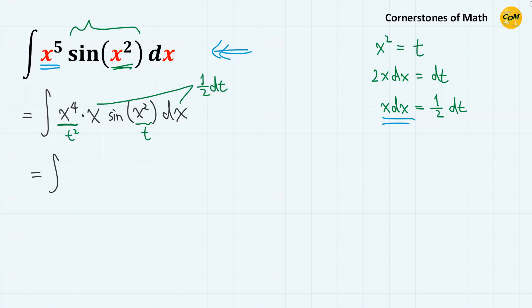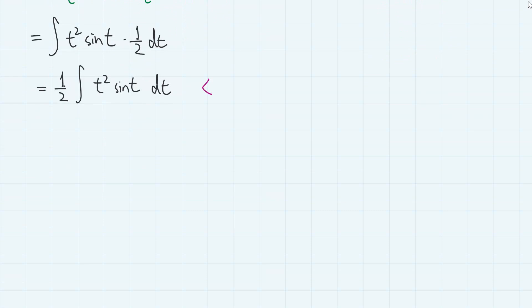So we have integral t squared sine t times 1 half dt. So 1 half integral t squared sine t dt. And we can integrate this using integration by parts. So we have to assign u and v prime.